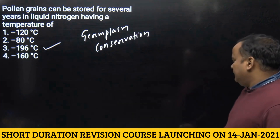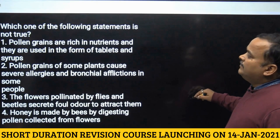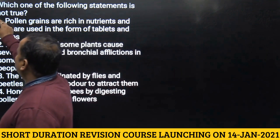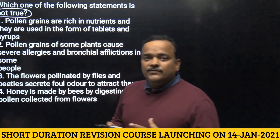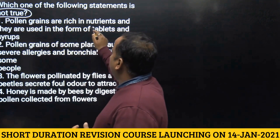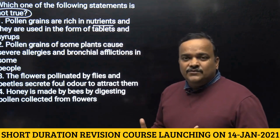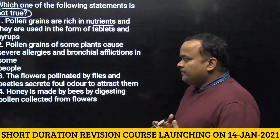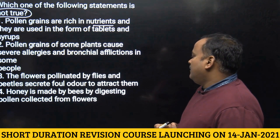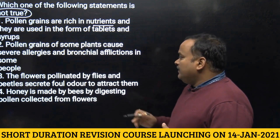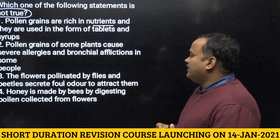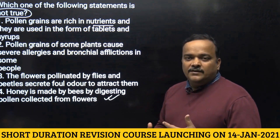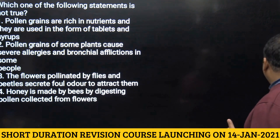The next question presents four statements and asks which one is NOT true. First: pollen grains are rich in nutrients and used in the form of tablets and syrup — true, useful for enhancing performance of athletes. Second: pollen grains of some plants cause severe allergy and bronchial affliction — true. Third: flowers pollinated by flies and beetles secrete foul odour to attract them — true. Fourth: honey is made by bees by digesting pollen collected from flowers — NOT true, because pollen is not digested. Honey is the vomit of the honey bee, so the answer is fourth.